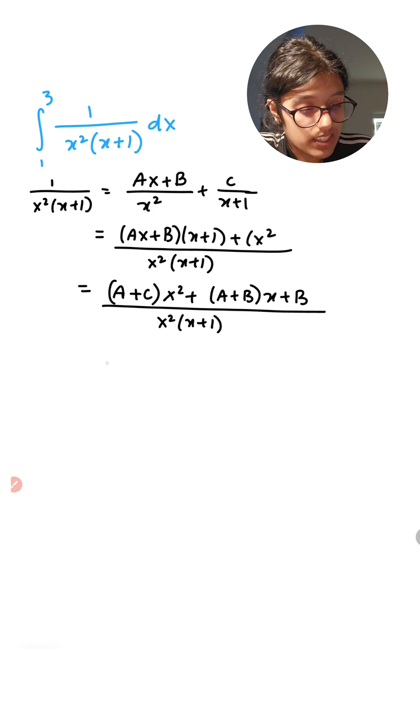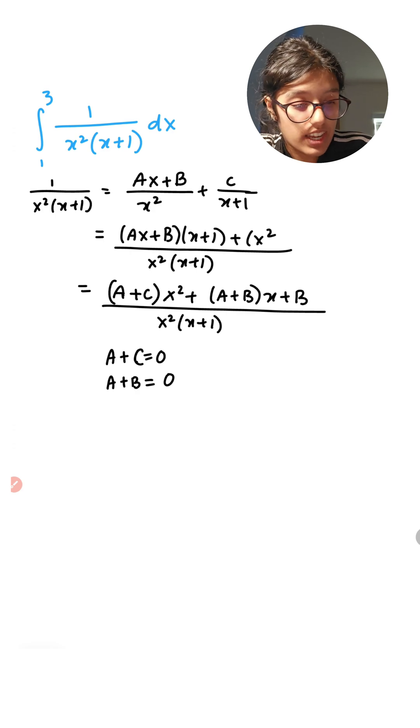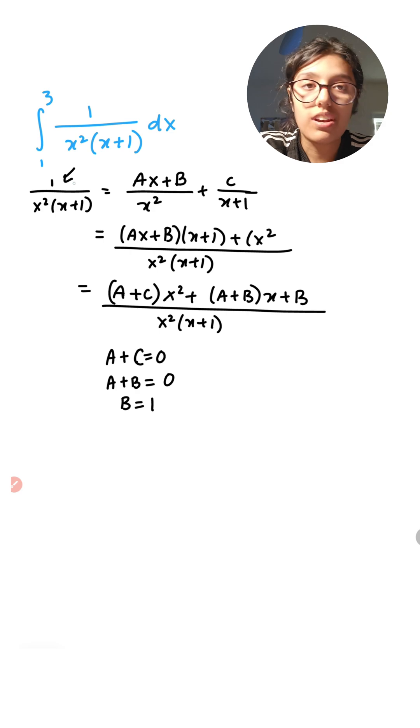So that is exactly what we're going to do on the right side. We're going to set A plus C equal to zero because there is no x squared on the left side. That is going to be the same thing for A plus B, and that's going to be zero because there is no x on the left side. But B is going to be equal to one because we do have one on the left side. And from here we can find A and C.